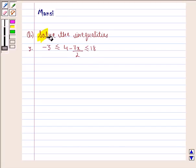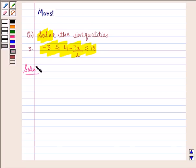In this question we have to solve the given inequality. Now let us start with the solution. We have minus 3 is less than equal to 4 minus 7x by 2 less than equal to 18.